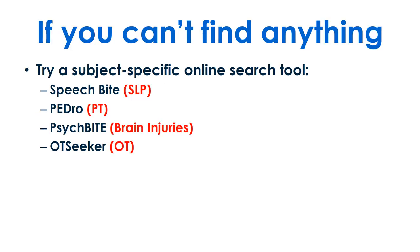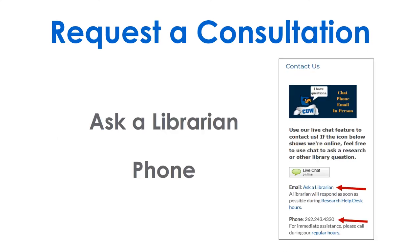Online subject-specific search tools are an additional resource to find citations. Return to Primo to find the full text of articles, or request a research consultation with a librarian for more help.